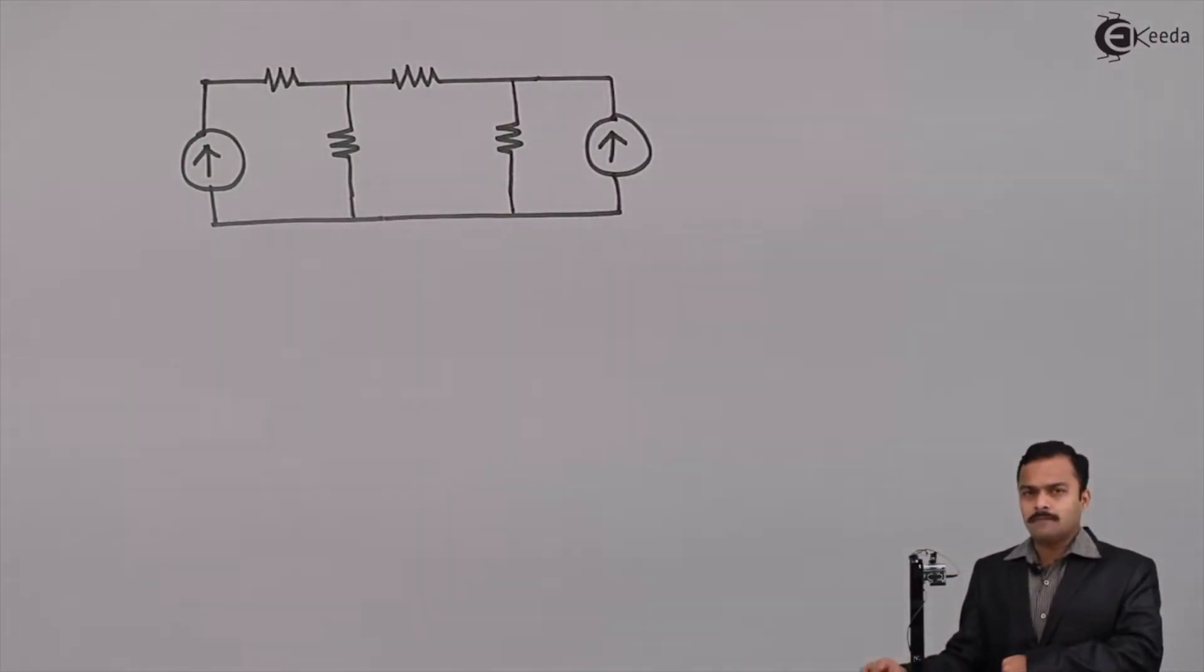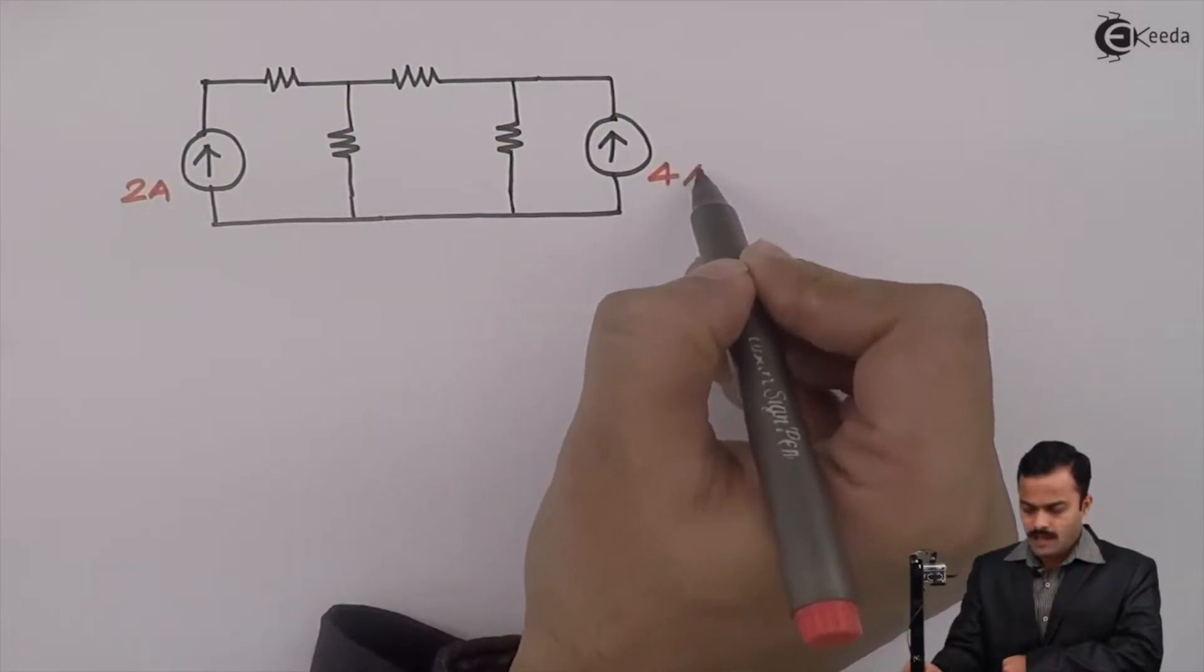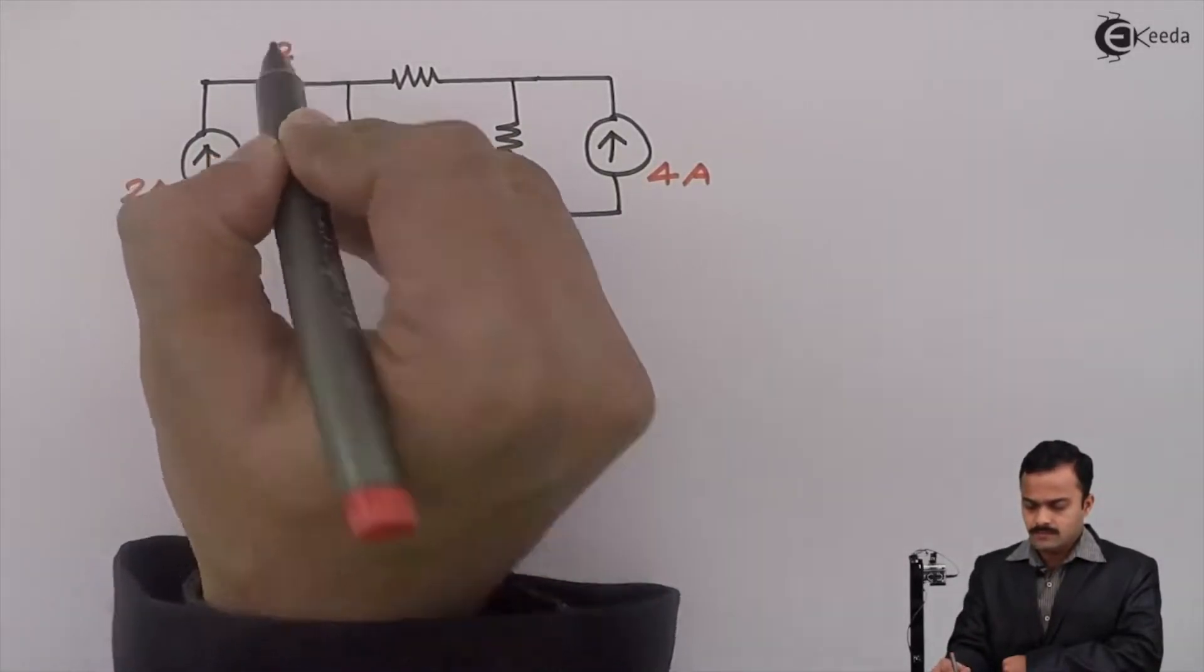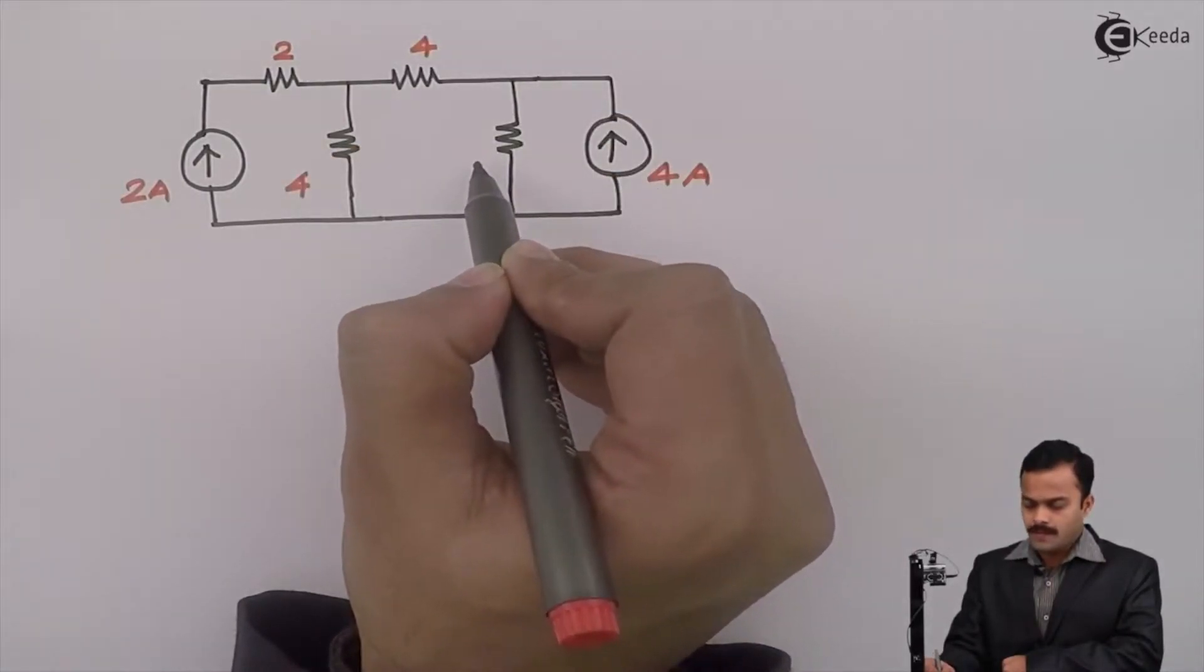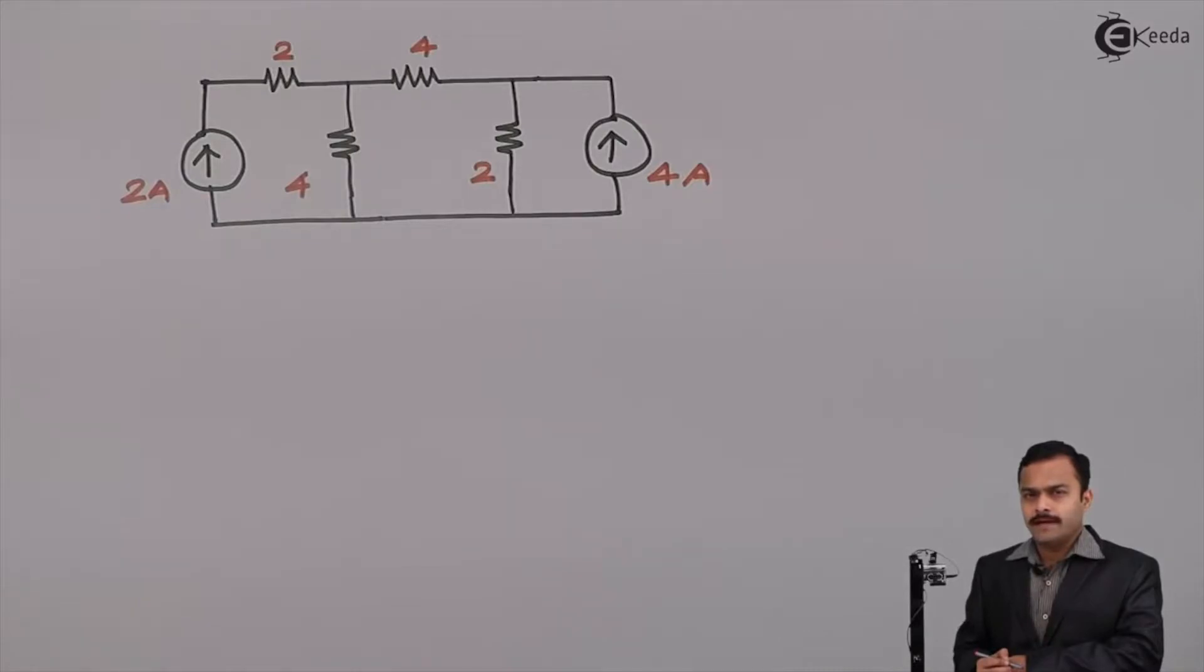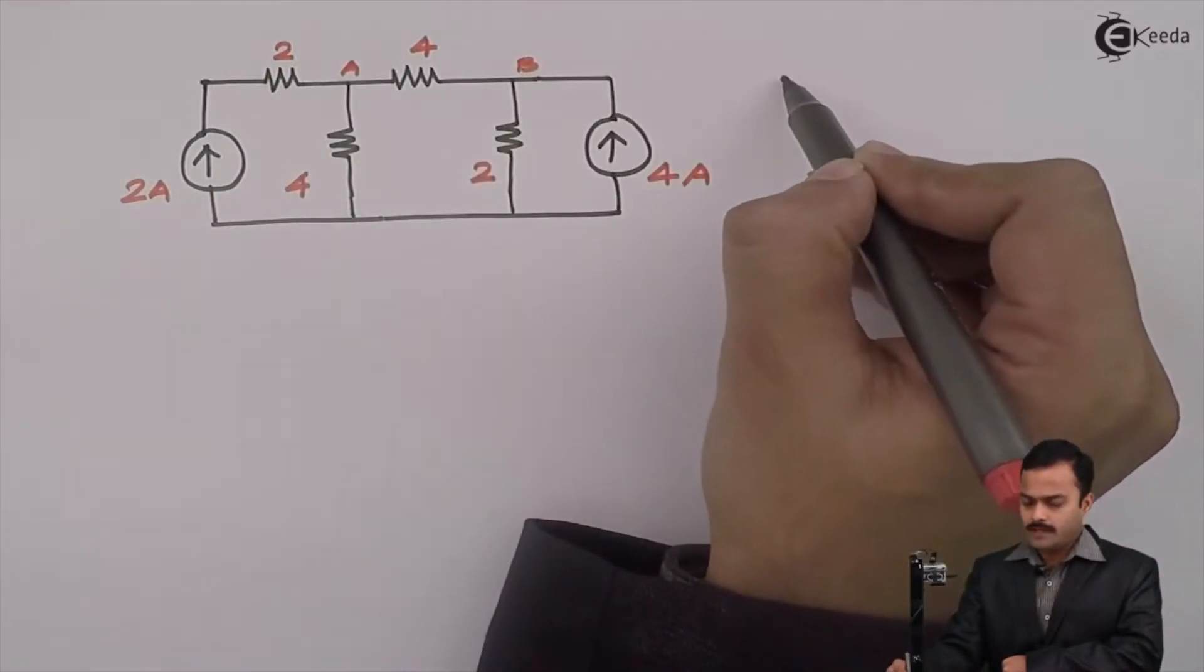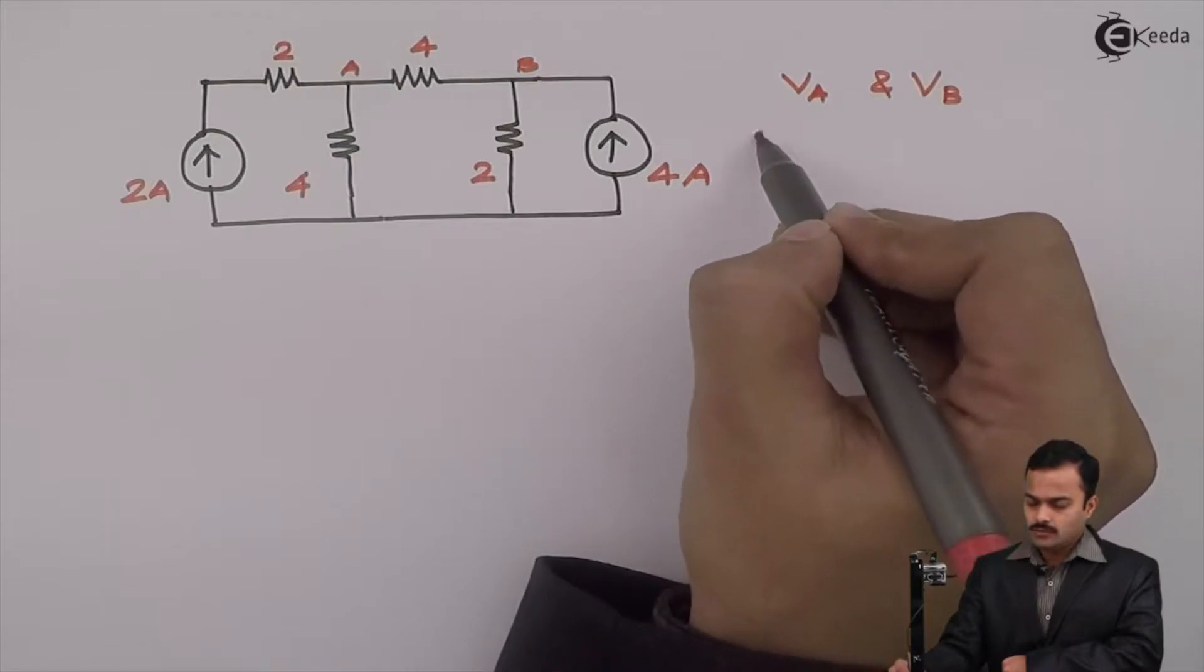In a problem I am considering two current sources of 2A and 4A and resistances are 2 ohm, 4 ohm, this is also 4 ohm and let's take this as 2 ohm. The objective is to find out voltages of nodes A and B. So we have to find out VA and VB using nodal analysis.